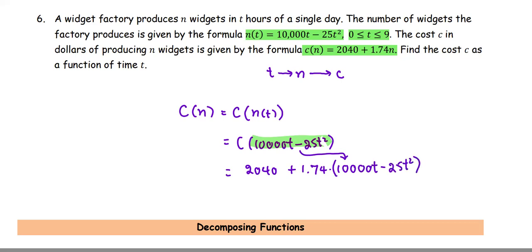As t is the input of n, and n is the input of c, it's going to be 2040, all combined into one function. If we simplify a little bit more, we've got 2040 plus, multiply 1.74 by 10,000, which gives us 17,400t minus, multiply 25 by 1.74, which gives us 43.5t².